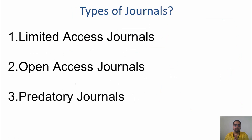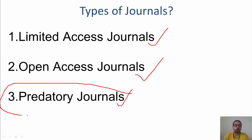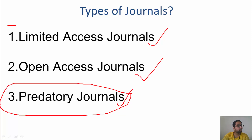There are three types of journals: first is the limited access journal, second is the open access journal, and third is the predatory journal. In any case, you must keep yourself safe from predatory journals, so go for either the limited access or open access option.